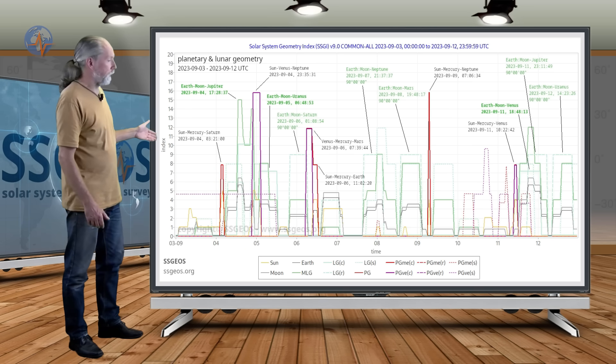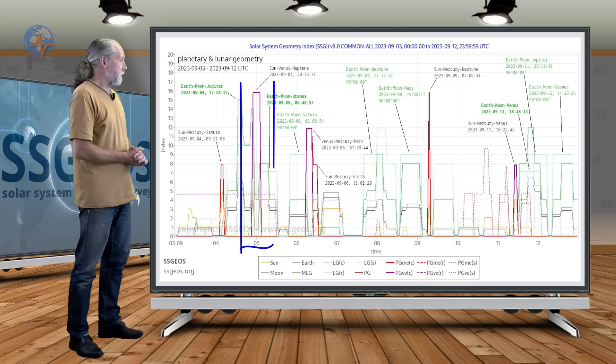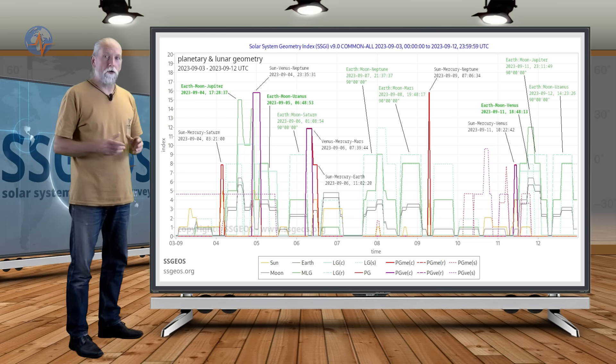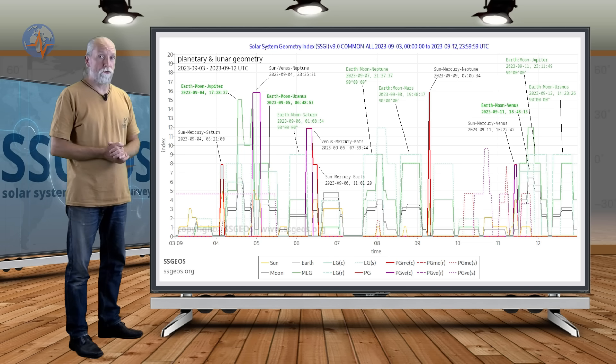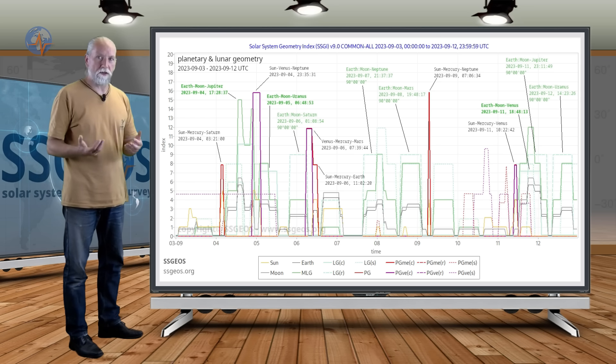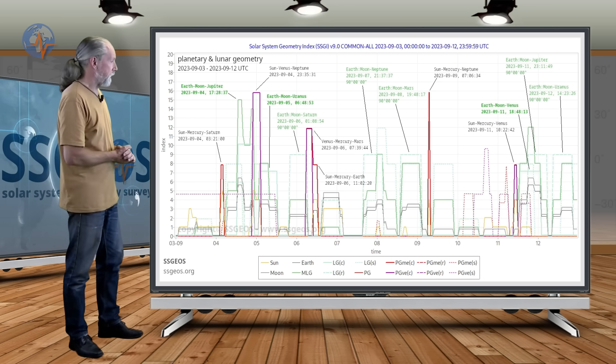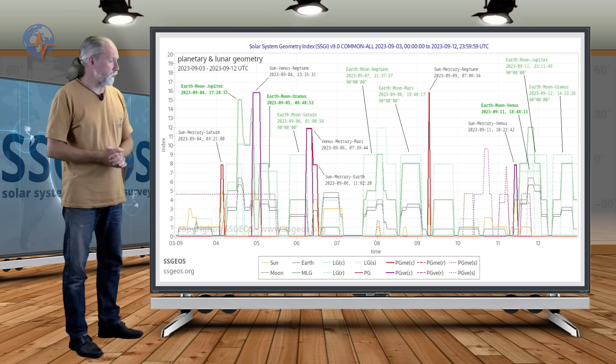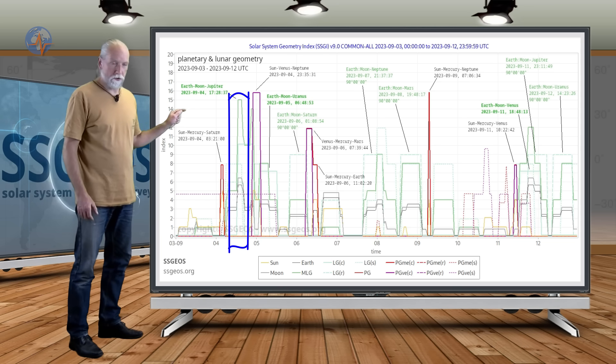It will be followed later on the same day by Sun-Venus-Neptune, and that is a critical conjunction. This is a critical convergence. What makes it even more critical is that it converges with critical lunar geometry, in particular Earth-Moon-Jupiter, also on the fourth.